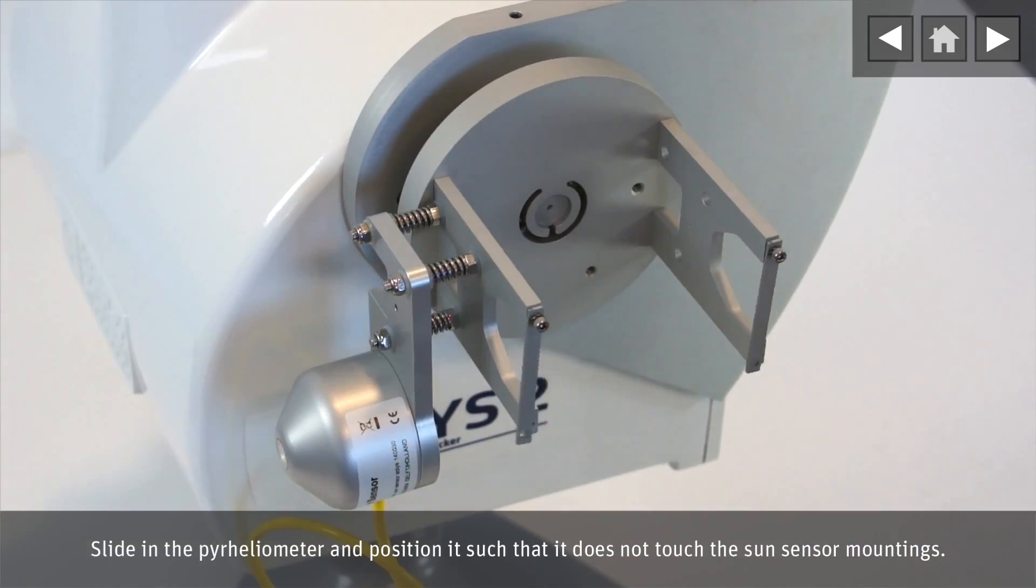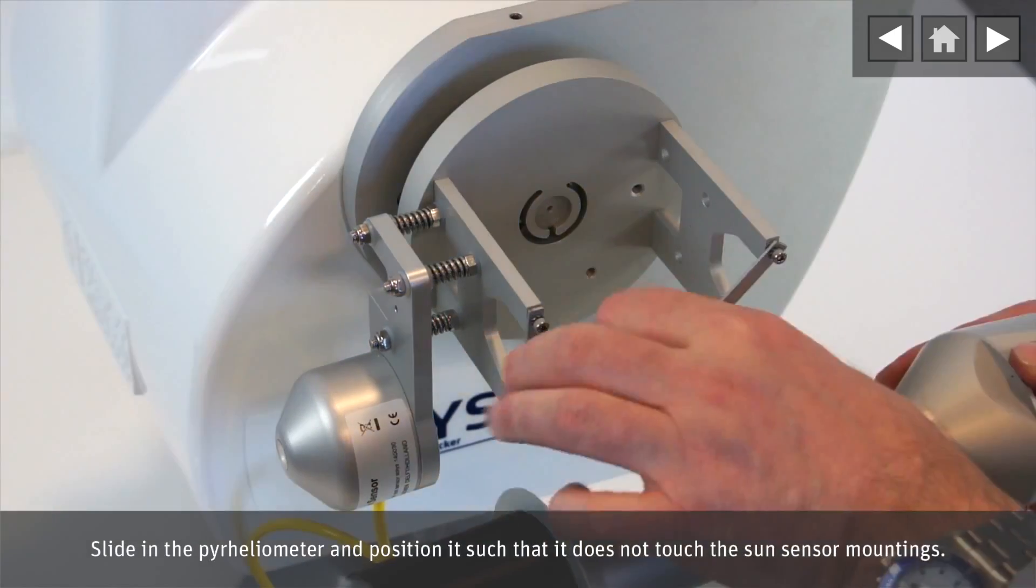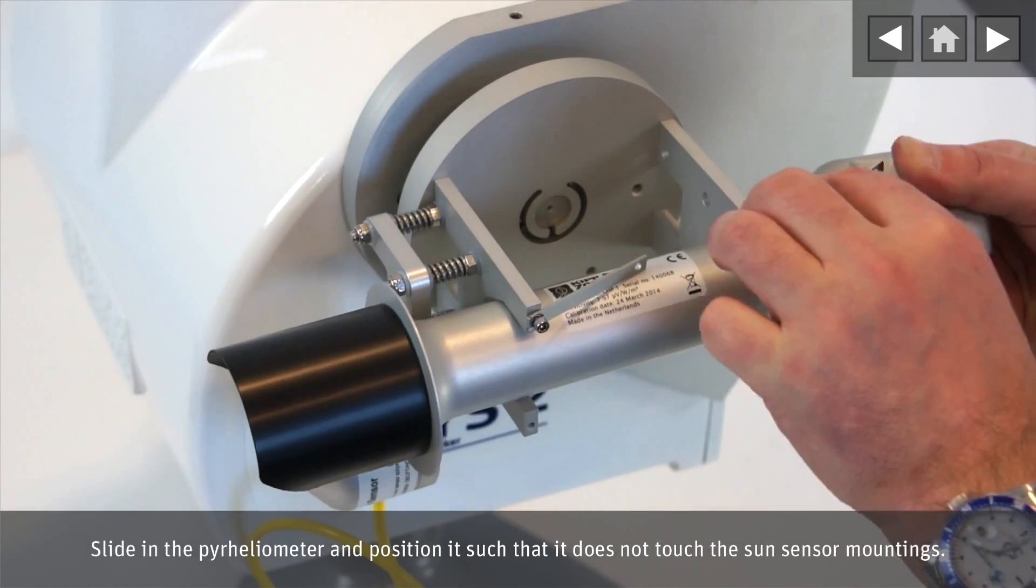Slide in the pyrheliometer and position it such that it does not touch the sun sensor mounting.